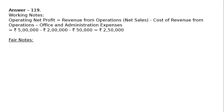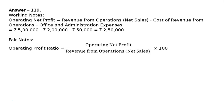In the final notes, operating profit ratio equals operating net profit divided by revenue from operations (net sales), multiplied by 100. That is rupees 2 lakh 50,000 divided by rupees 5 lakhs, multiplied by 100, which equals 50 percent.